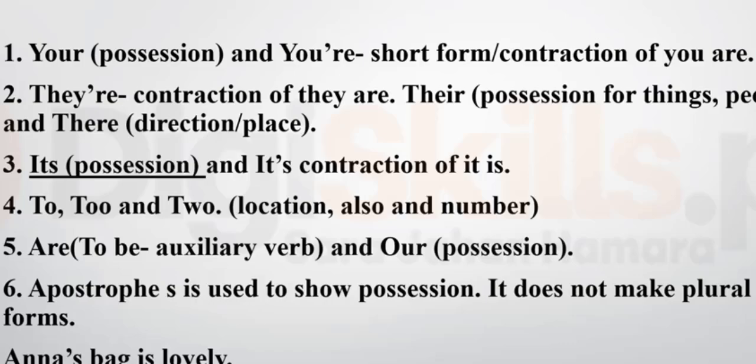'Its' (I-T-S, without apostrophe) shows possession — it is a possessive pronoun. For example, describing a wooden table: 'Its legs are very strong.' 'It's' (I-T-apostrophe-S) is the contraction of 'it is' — for example, 'It's a beautiful day,' 'It's my bag,' 'It's an interesting story.' So 'its' without apostrophe is possessive, and 'it's' with apostrophe is the contraction of 'it is.'